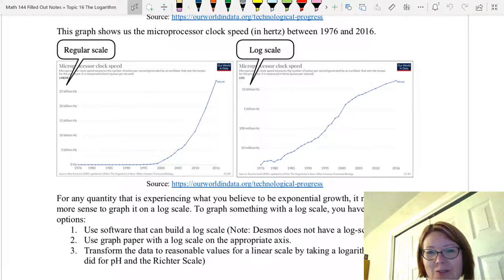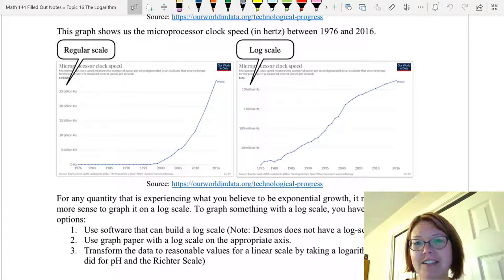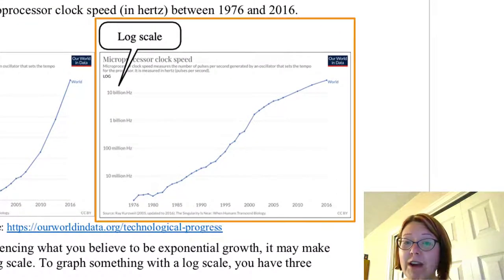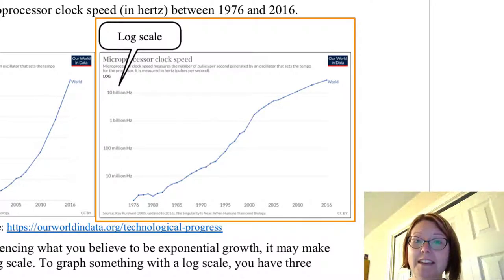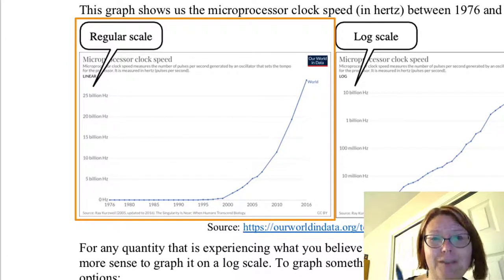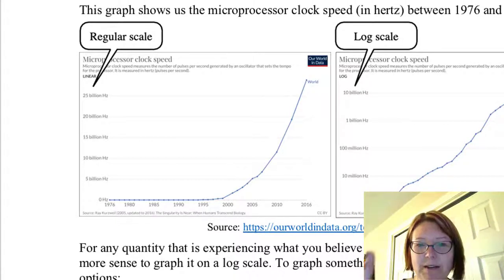Another famous log scale graph is the microprocessor clock speed in hertz between 1976 and the current year, or in this case 2016. If we look at the graph with the log scale, we see on the x-axis the years between 1976 and 2016, and on the y-axis that log scale goes 10 million hertz, 100 million hertz, 1 billion hertz, 10 billion hertz. So we're multiplying by a factor of 10 with each evenly spaced line. On the left graph, if we looked at this with a linear timescale, or a regular scale, our evenly spaced lines would be something like 5 billion, 10 billion, 15 billion, 20 billion, 25 billion. So we're counting by 5 billion each time, adding 5 billion each time, not multiplying by 10.